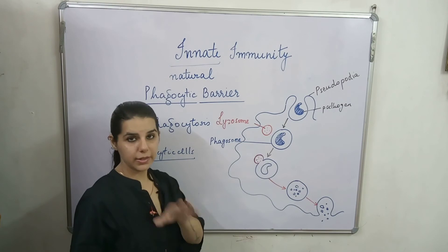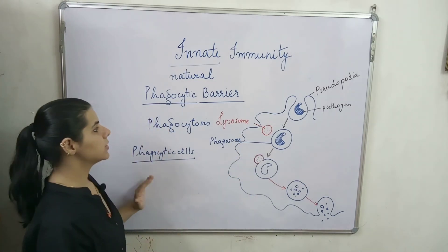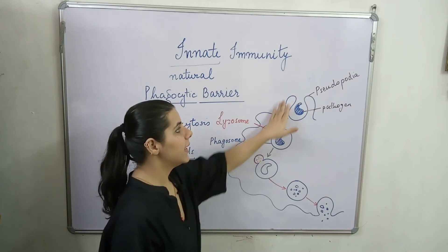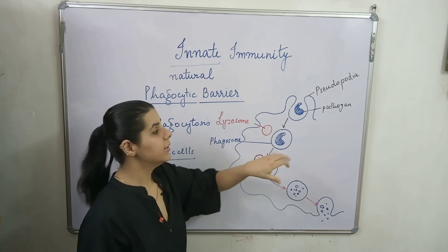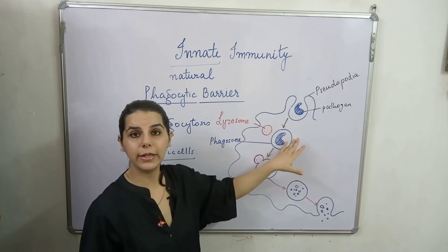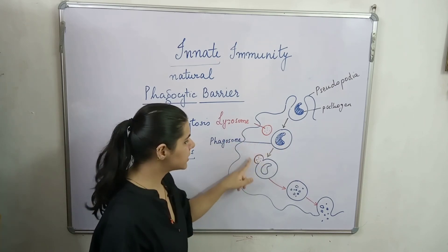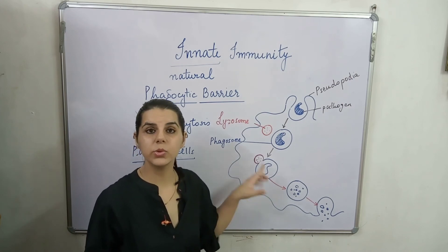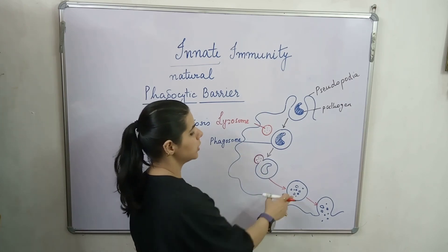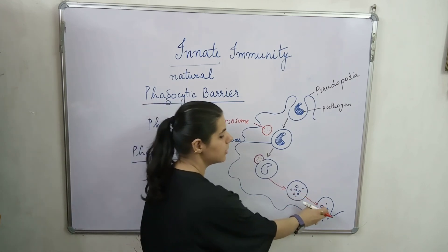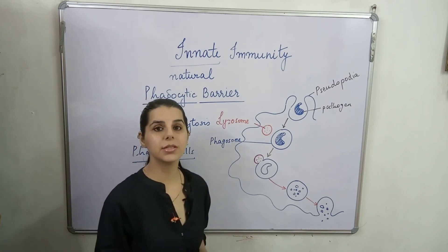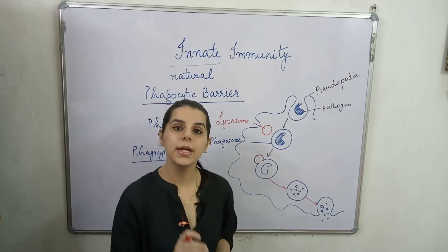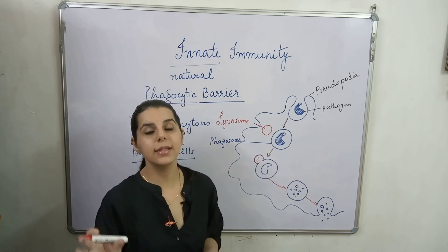These breakdown products are thrown out of the cell. This is how phagocytosis occurs in phagocytic cells like macrophages and neutrophils — they engulf the pathogen, the lysosome fuses with the phagosome, and the lytic enzymes act on the pathogen. This is how these phagocytic cells provide immunity and protection by killing and lysing the pathogen.